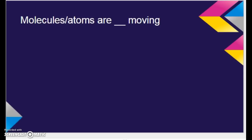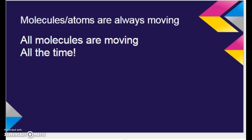Molecules or atoms are blank moving. So how would you fill that in? Molecules, atoms are always moving. So all molecules are moving all the time. The only time molecules would stop moving is if we get to absolute zero, which would be zero Kelvin or approximately negative 458 degrees Fahrenheit. So insanely crazy cold. And no, we have never had that happen. Scientists are trying. We've talked about that in a previous lesson. So as far as we're concerned, all molecules in the entire universe are always moving.